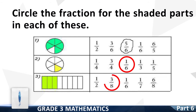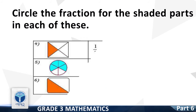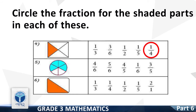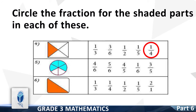Good, it is 4 by 6. Next, circle the fraction for the shaded part. Good, it is 1 by 4. Next, circle the fraction for the shaded parts. Good, it is 4 by 6.